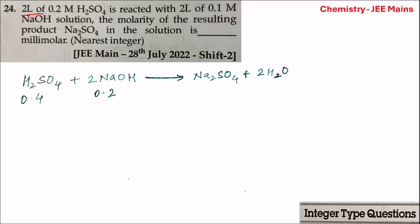2 liters of 0.2M H₂SO₄ is reacted with 2 liters of 0.1M NaOH solution. The molarity of the resulting product Na₂SO₄ in the solution is blank millimolar. The reaction is: 1 mol of H₂SO₄ plus 2 mol of NaOH forming Na₂SO₄ plus 2 mol of H₂O.